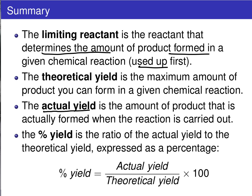We then discussed how, in practice, you never actually achieve that theoretical maximum due to side reactions, experimental error, etc., and we defined the ratio of that actual yield to the theoretical yield, expressed as a percentage, as the percent yield for that chemical reaction equation.